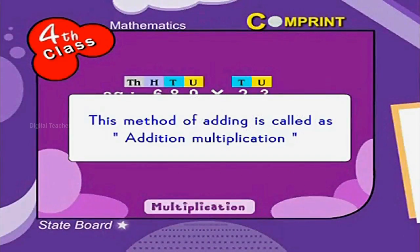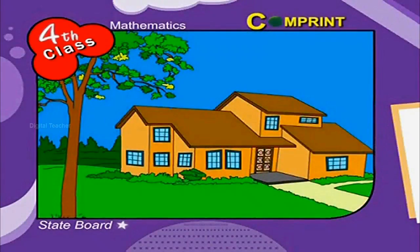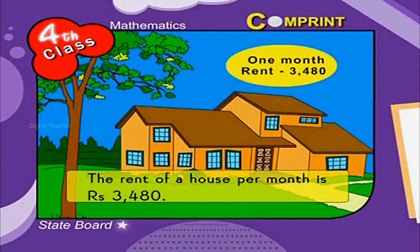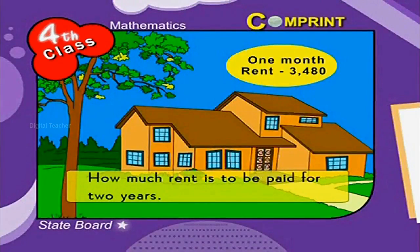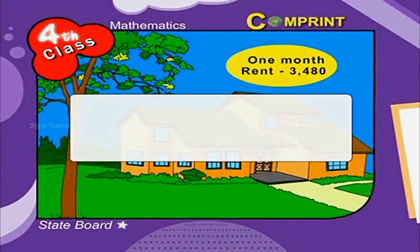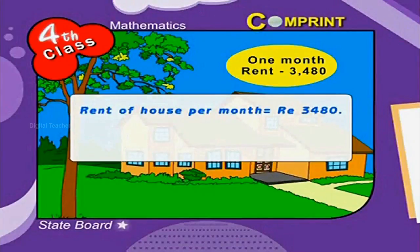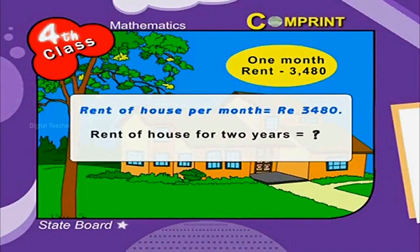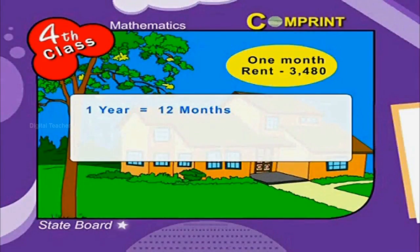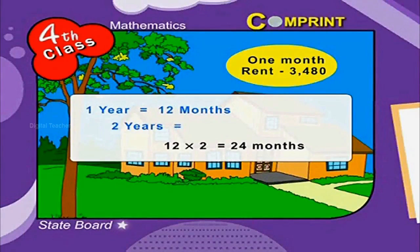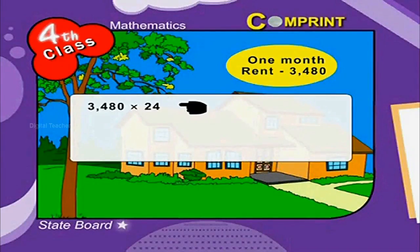Now let us see another example. The rent of a house per month is Rs. 3480. How much rent is to be paid for 2 years? Rent of house per month is Rs. 3480. 1 year is equal to 12 months, so 2 years is equal to 12 into 2, which is equal to 24 months. Now let us multiply 3480 into 24.